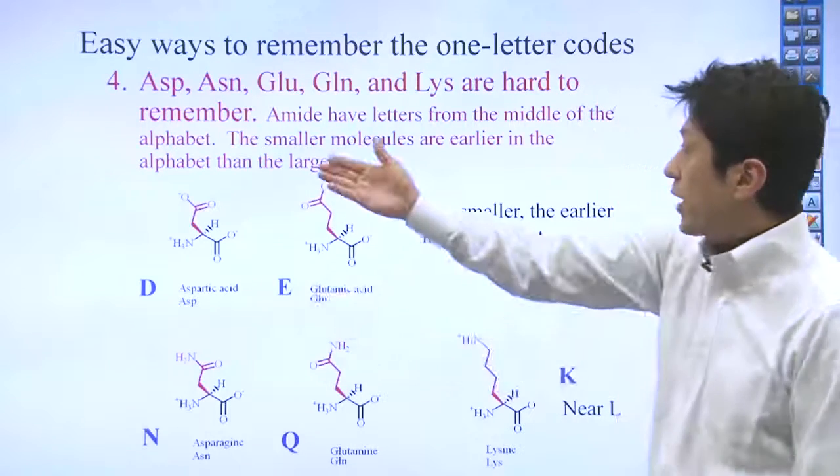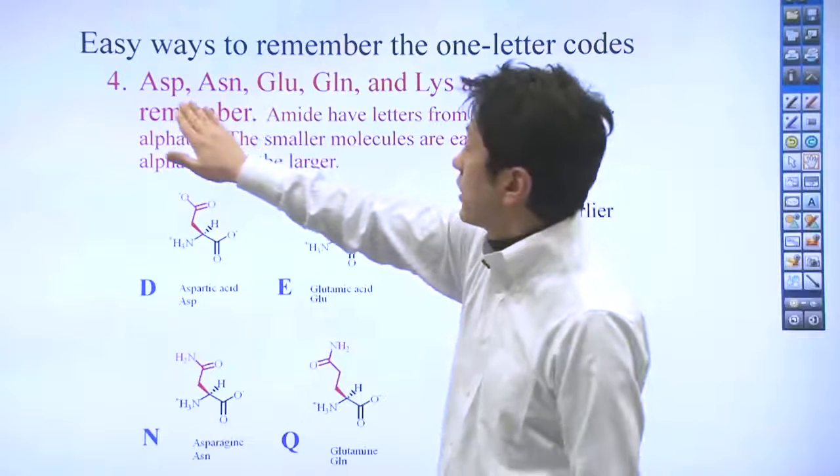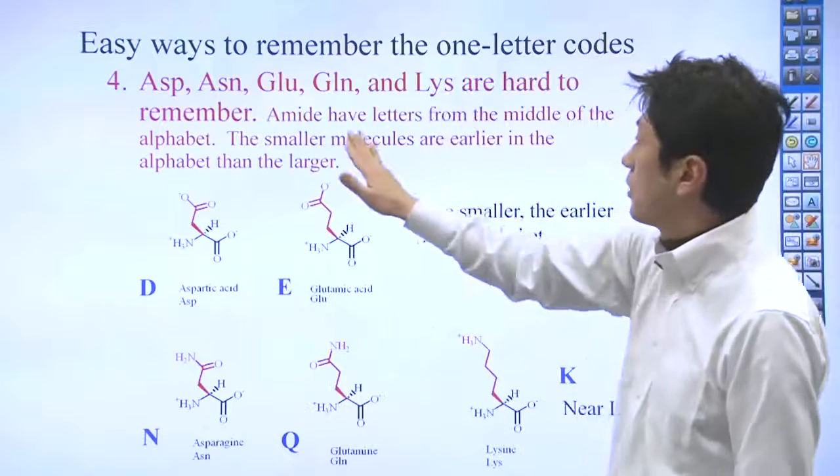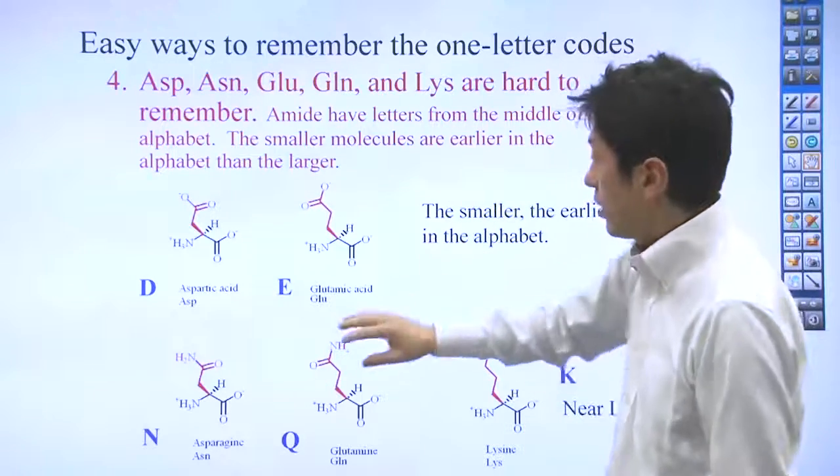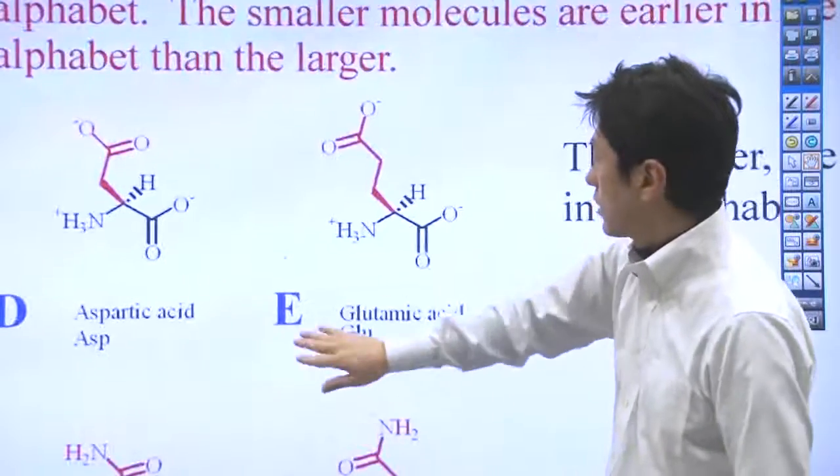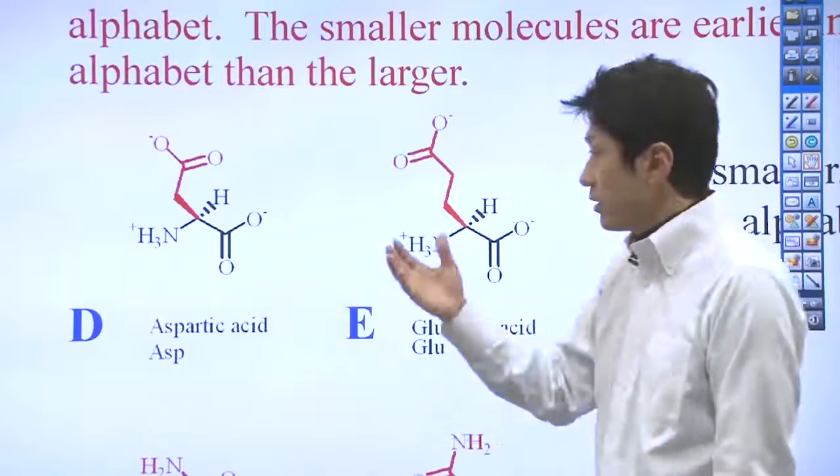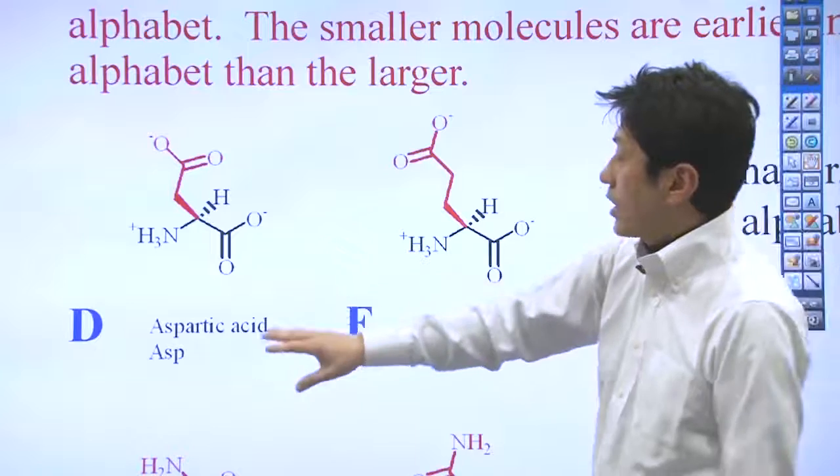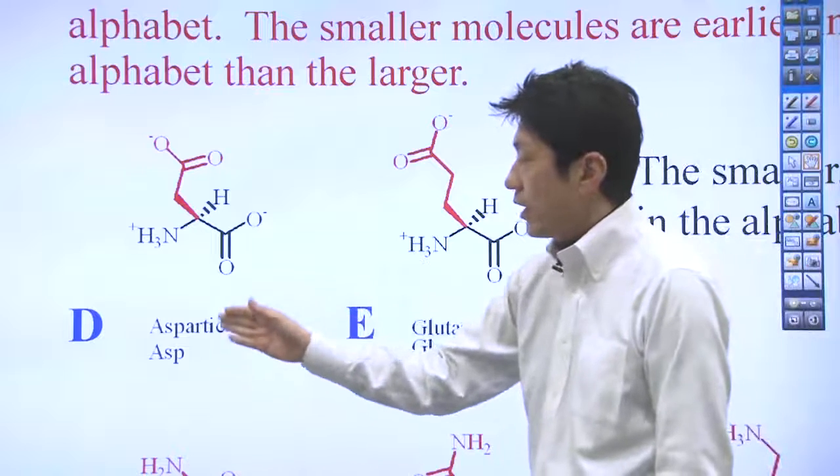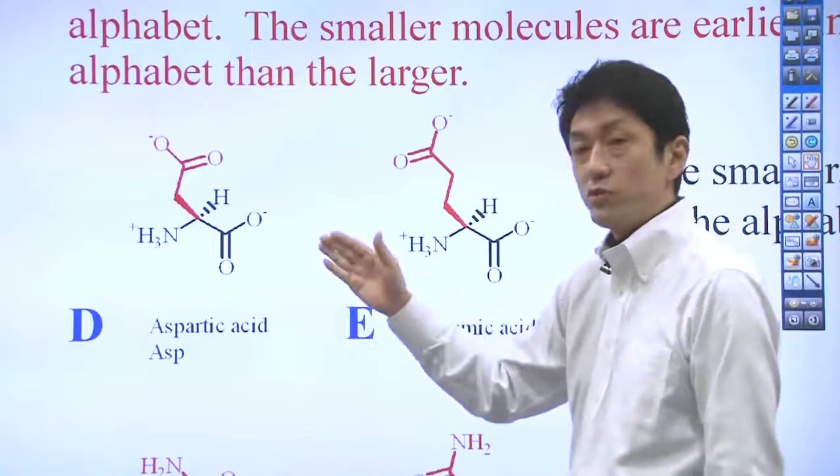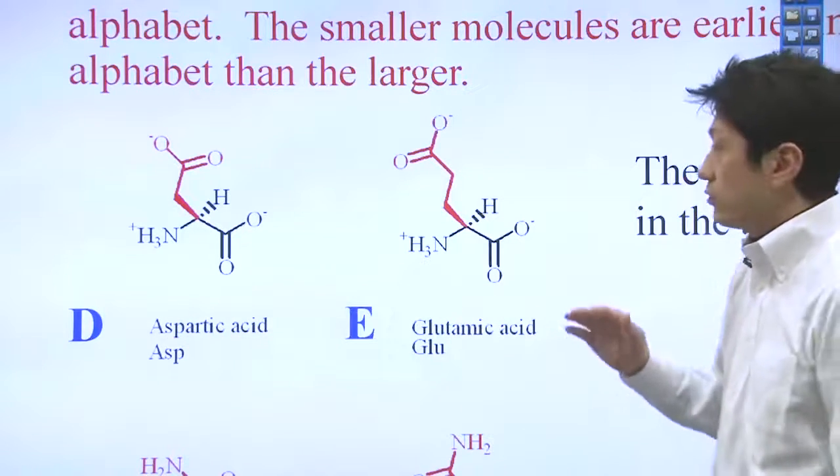The last way is this one. Aspartic acid, asparagine, glutamic acid, glutamine, and lysine are hard to remember. These are really hard to remember. You just simply need to remember them. There's the structure of aspartic acid and glutamic acid. These two, if you remember, are umami amino acids. They taste really good. Aspartic acid is actually D, and glutamic acid is E. We can't use A for aspartic acid because we used A for alanine. It's D. Glutamic acid is E.